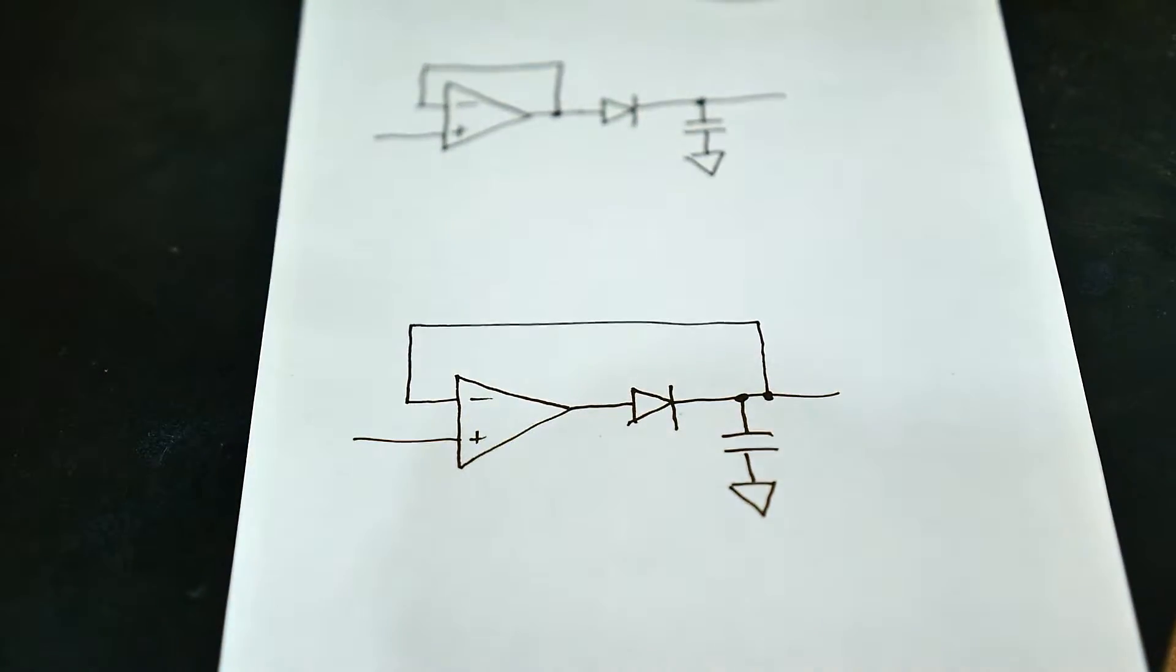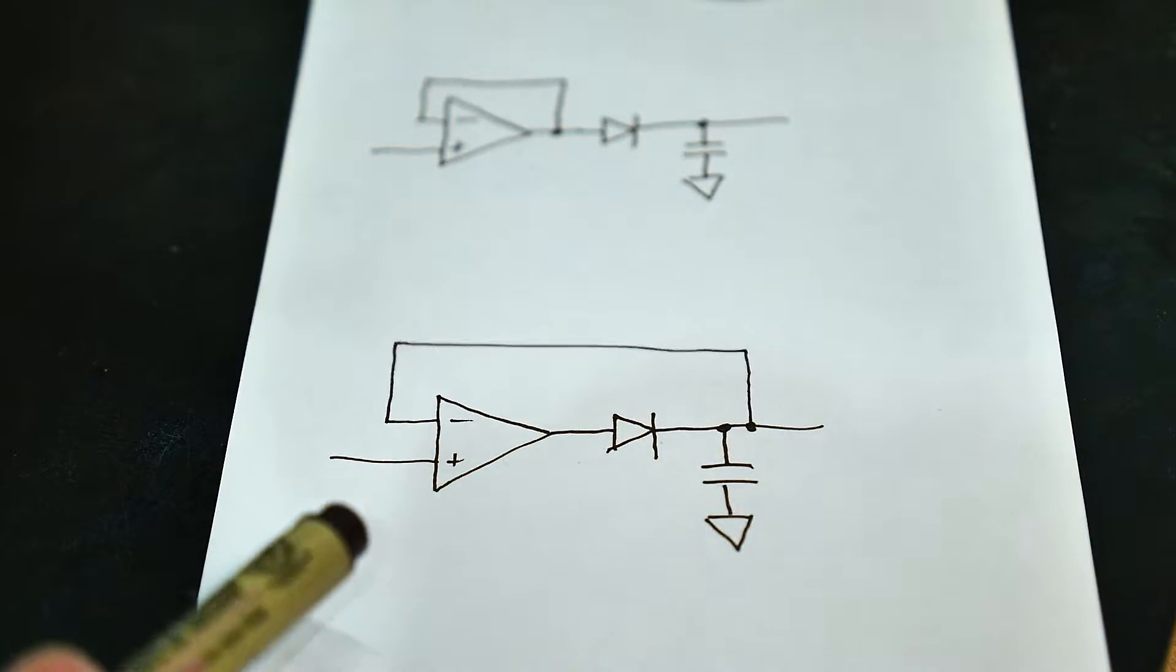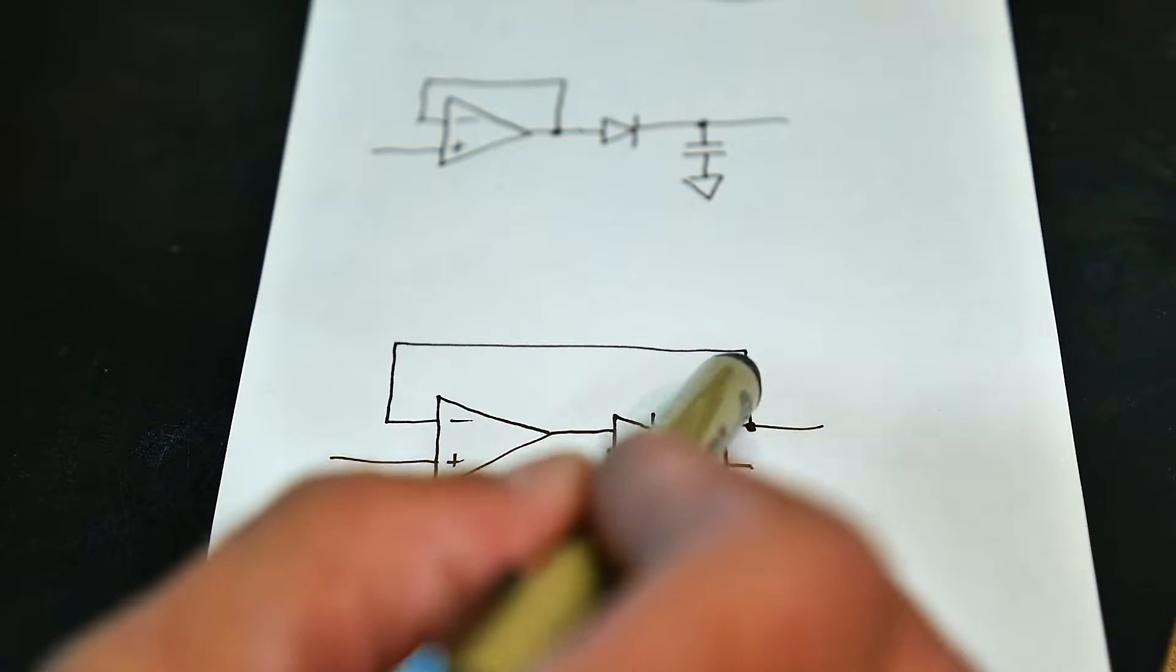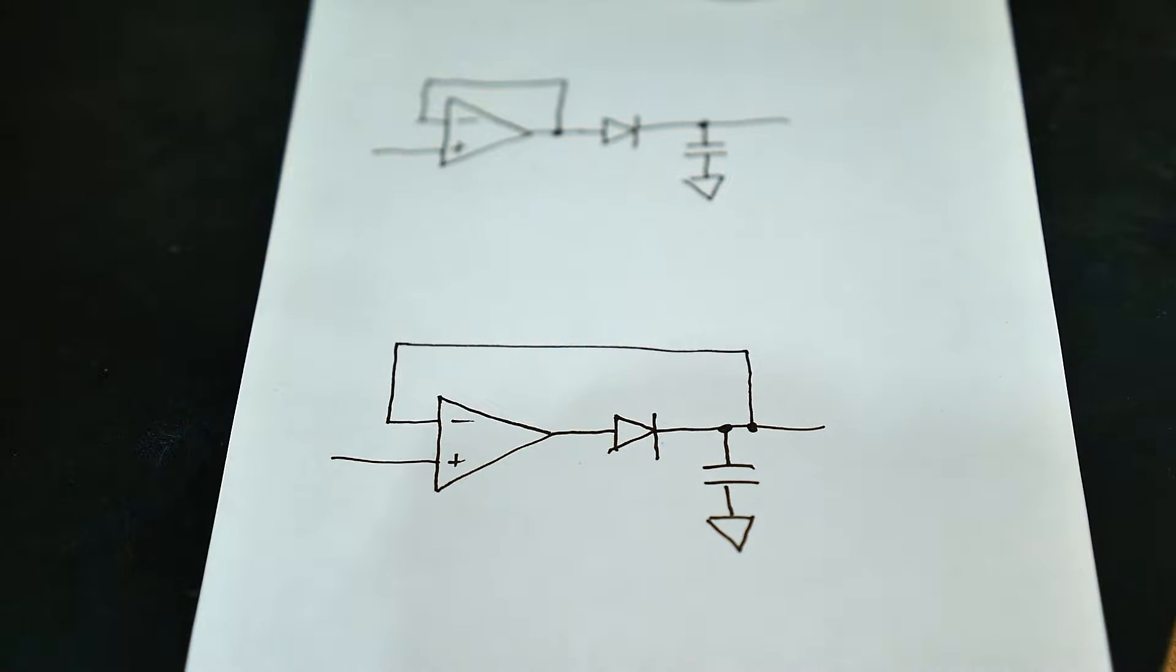Well again we're going to use the trick of this feedback. We're going to put the feedback through this whole circuit so this will capture exactly the peak of the input but still act as a rectifier.